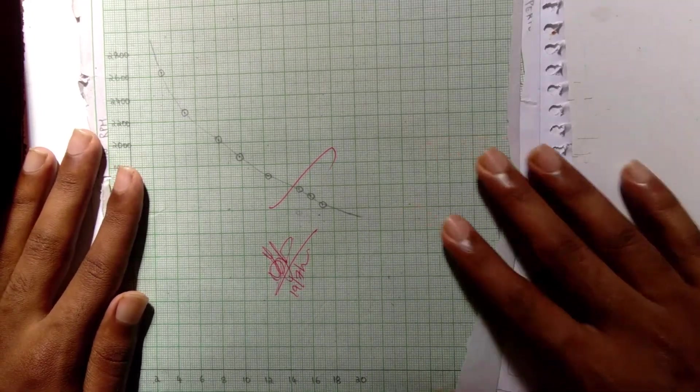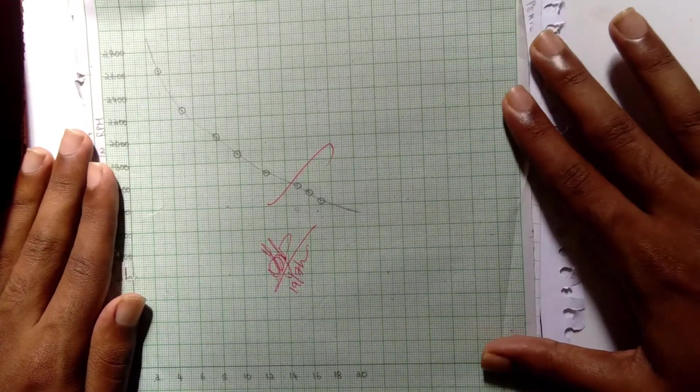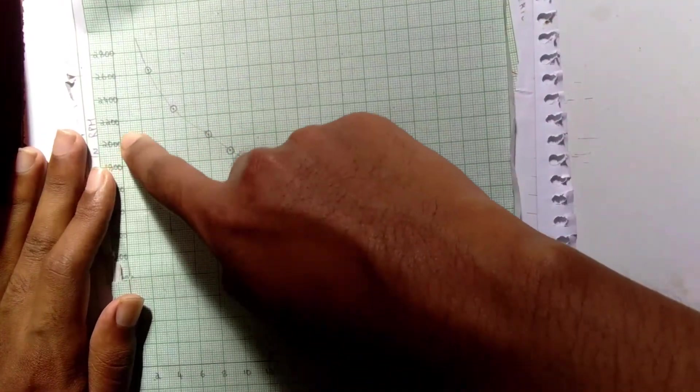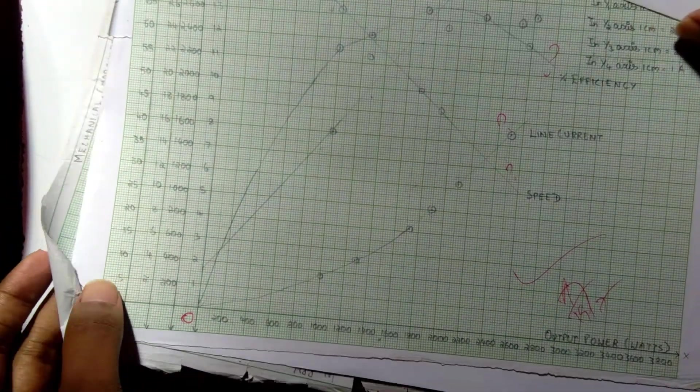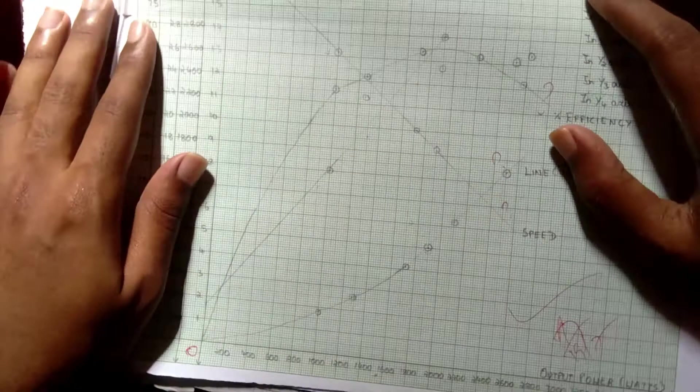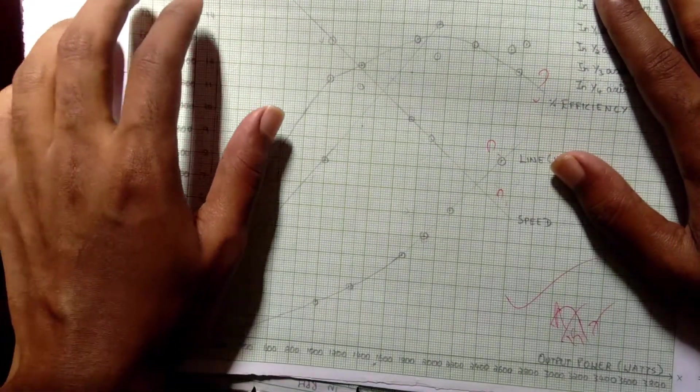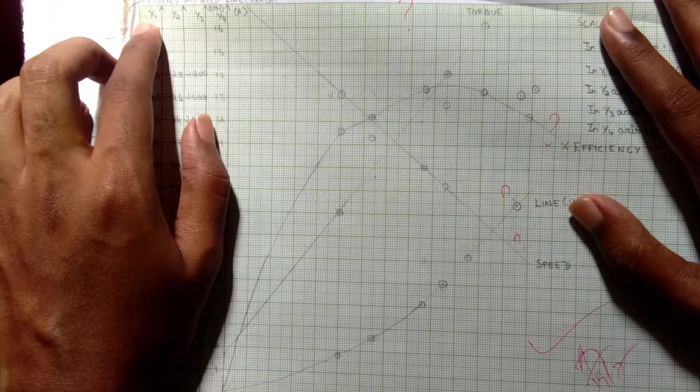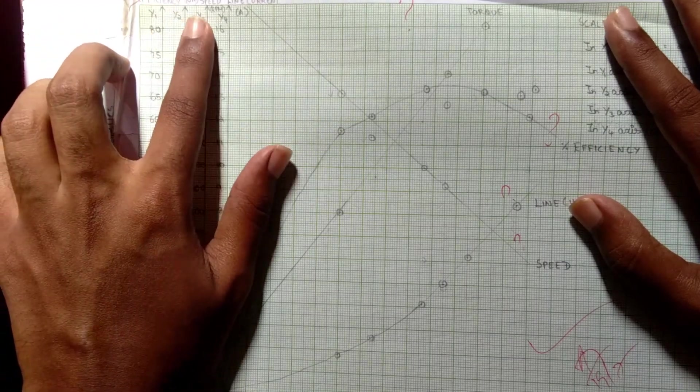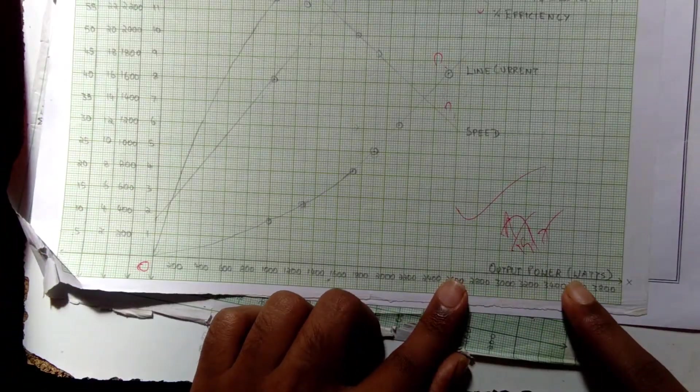This is the mechanical characteristics. In X axis we take the torque in newton meter, and in Y axis I have taken the speed in RPM. For the performance characteristics graph, it may take more time to draw. In Y axis we have four axes: one for efficiency, other for torque, other for speed and line current. In X axis we have output power in watts.